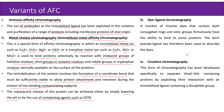Another variant is dye ligand chromatography, where a number of triazine dyes containing both conjugated rings and ionic groups have the ability to bind to some proteins. The term pseudo-ligands has therefore been used to describe these dyes. Covalent chromatography is a form developed specifically to separate thiol-containing proteins by exploiting their interaction with an immobilized ligand containing a disulfide group.